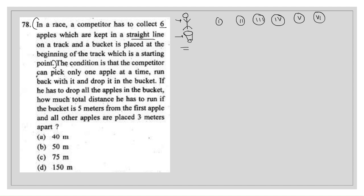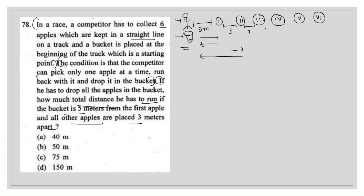The condition is that the competitor can pick only one apple at a time, run back with it, and drop it in the bucket. So for the first apple he runs to it, comes back, and drops it. Then goes to the second apple, comes back and drops it — and the series continues. The bucket is 5 meters from the first apple, and all subsequent apples are placed 3 meters apart.